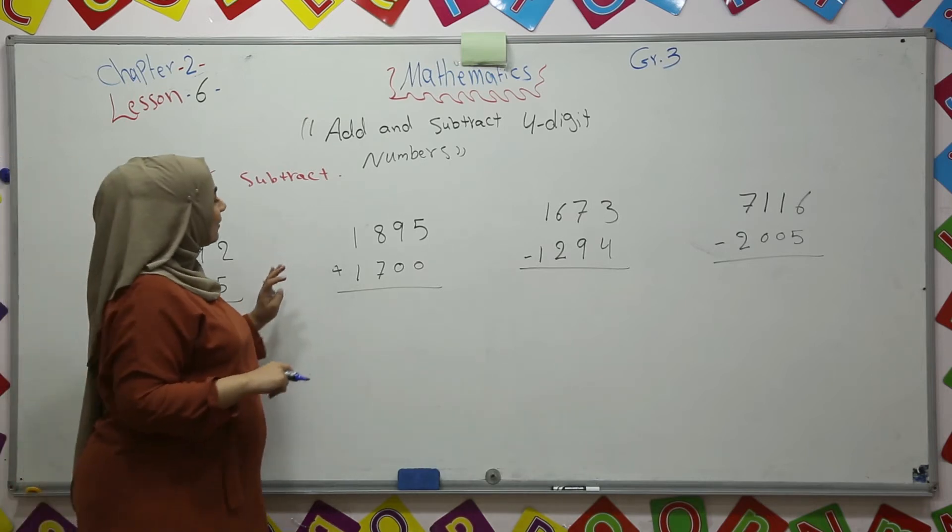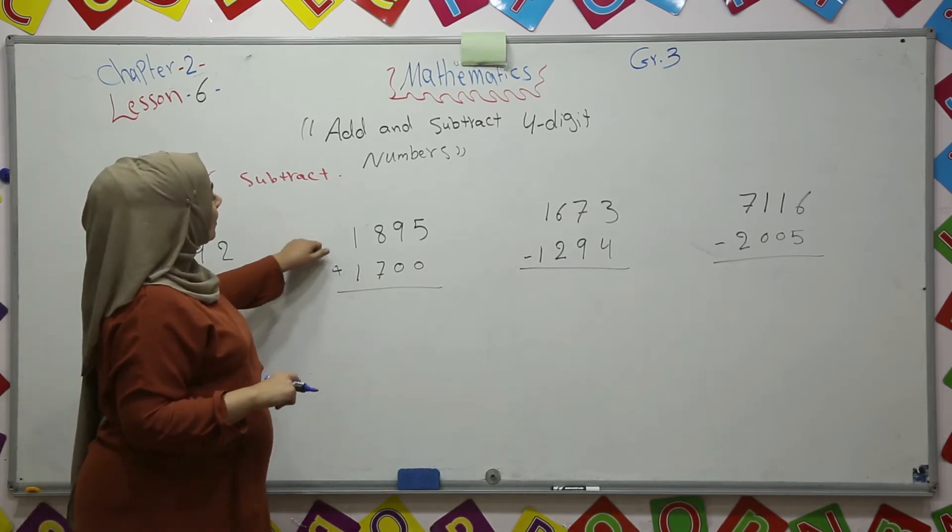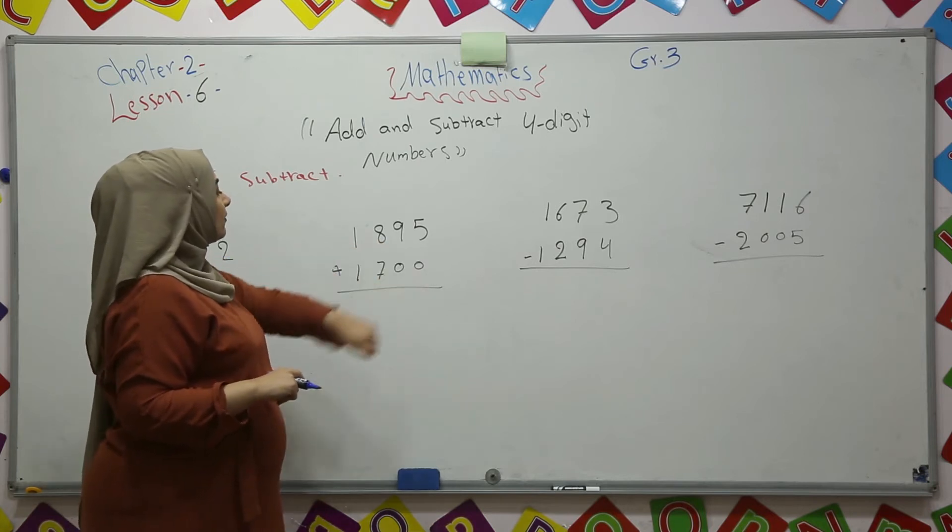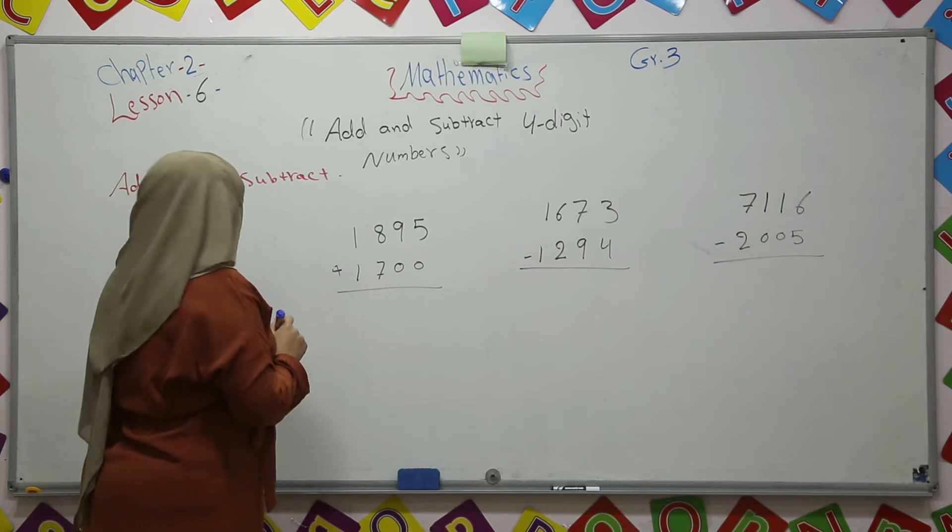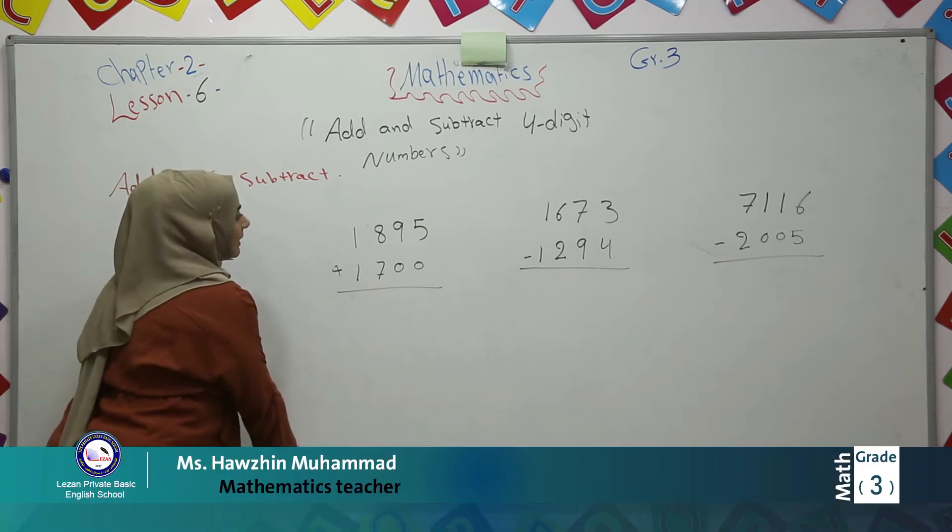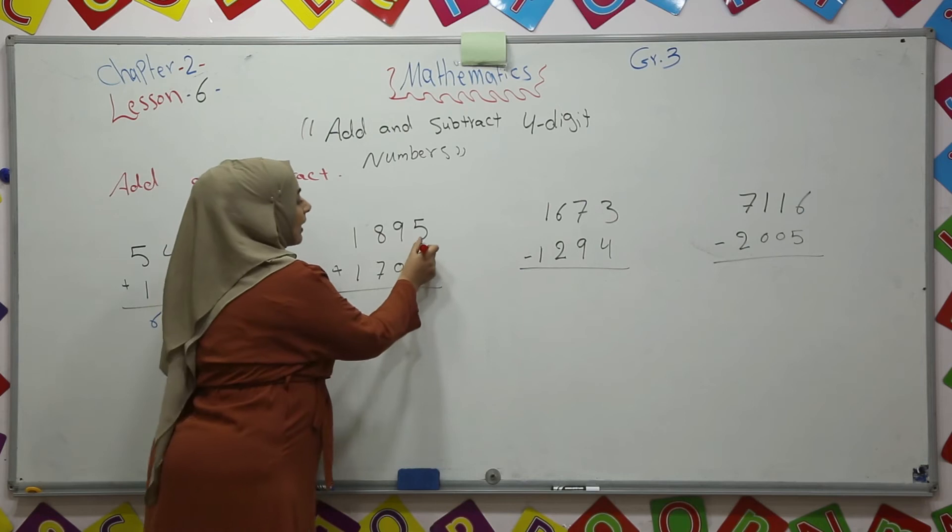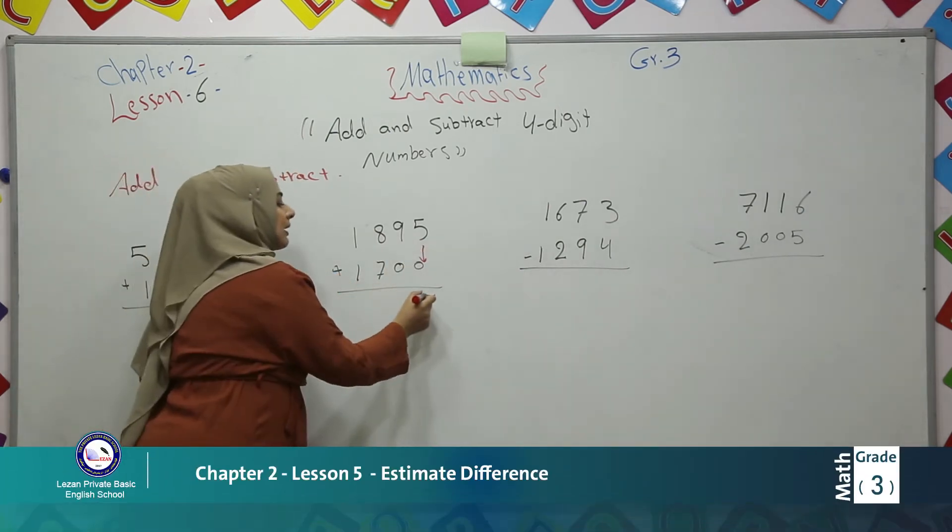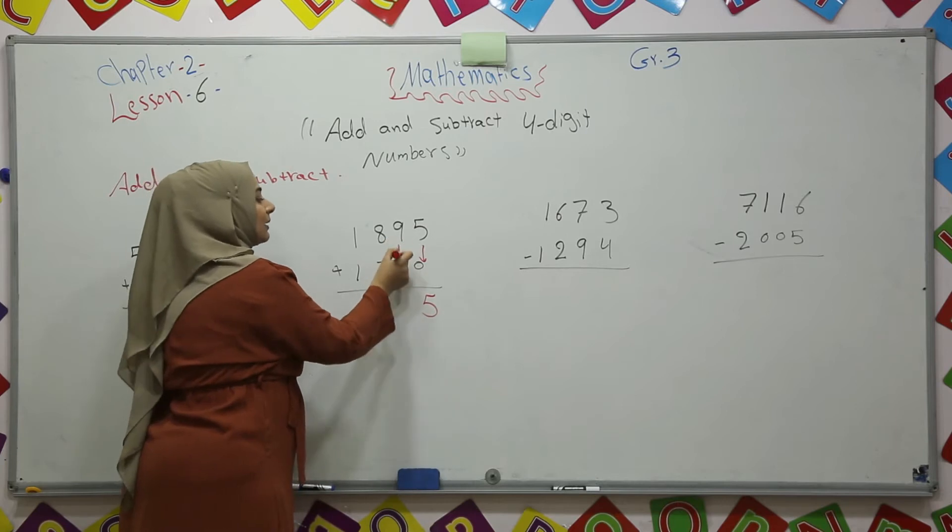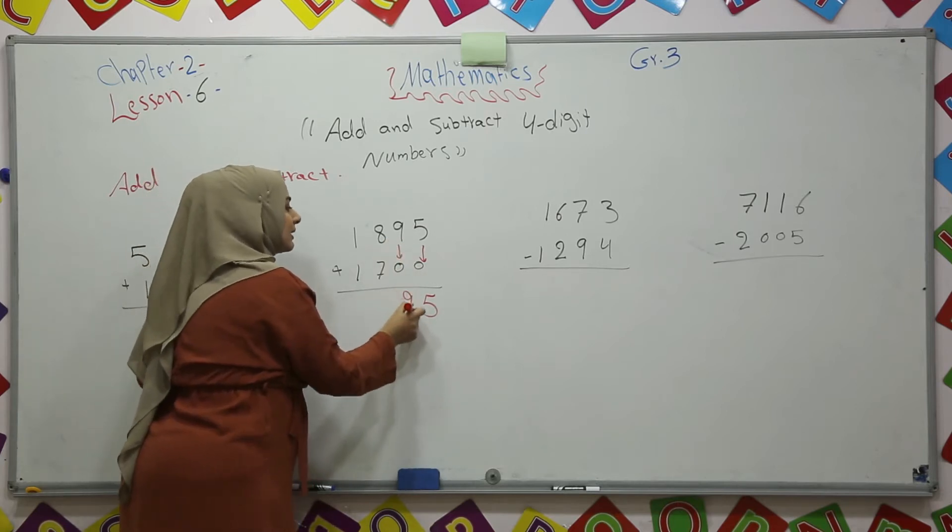Now we have another question. 1,895 plus 1,700. We will start from ones. 5 plus 0 will stay as 5. 9 plus 0 will stay as 9.